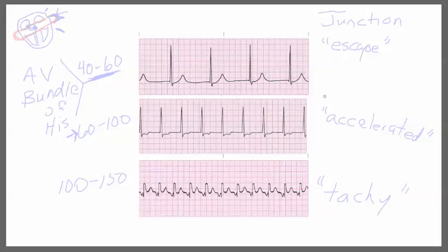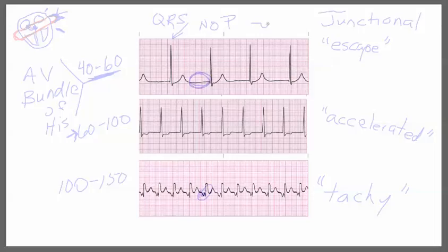It's all about naming it with a first and last name. We know it's junctional because of a couple of things to keep in mind. With junctional rhythms, the QRS is still narrow. And there's either not going to be a P wave — it'll be flat — or in some cases you can see that the P wave is inverted.